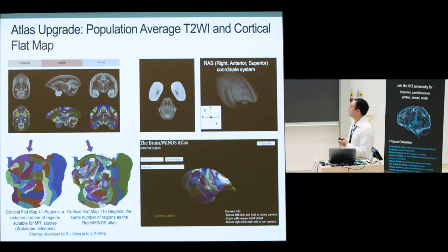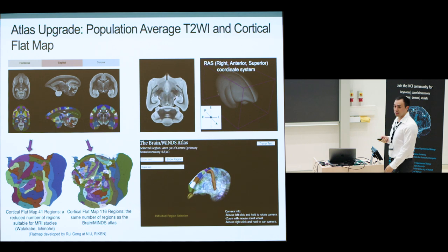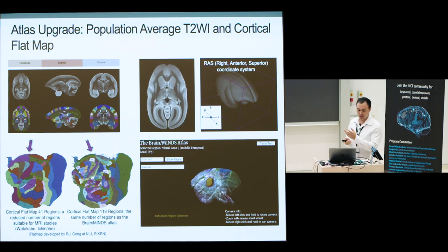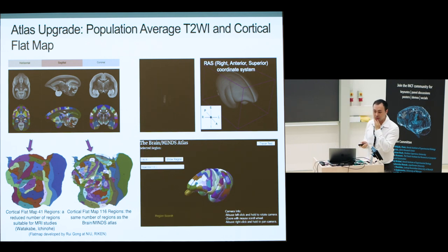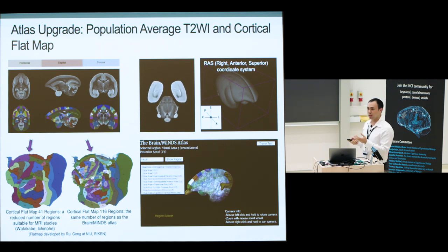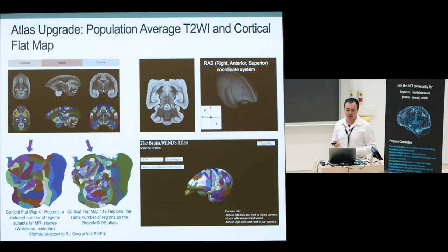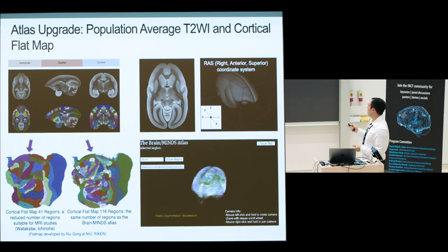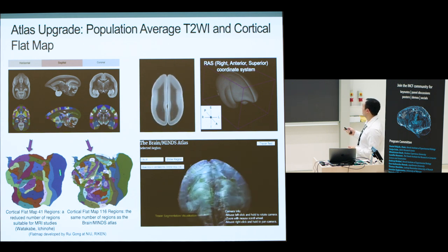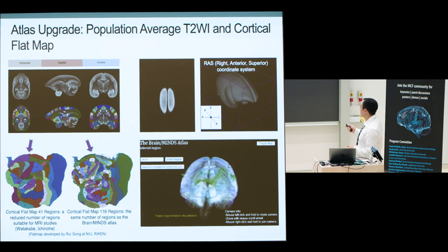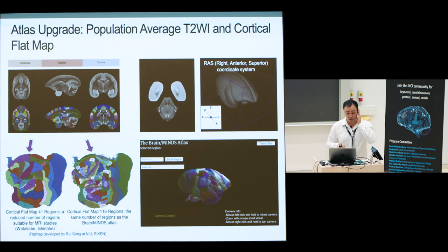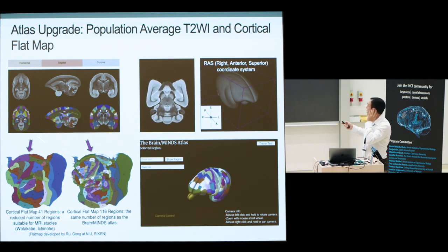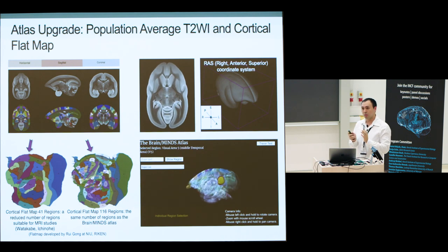We've also been upgrading this — now we have a population average based on 25 MRI T2-weighted image scans, mapped with the atlas, providing a nice MRI contrast from the same scanner used in the project. We also created a flat map. This parcellation has 116 regions corresponding to the original atlas divisions, with an aggregation option for MRI studies that want a coarser-grain division.